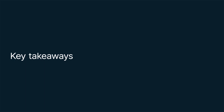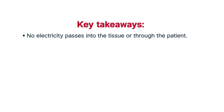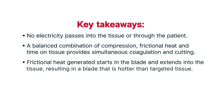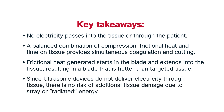Key takeaways. No electricity passes into the tissue or through the patient. A balanced combination of compression, frictional heat, and time on tissue provides simultaneous coagulation and cutting. The frictional heat generated starts in the blade and extends into the tissue, resulting in a blade that is hotter than the targeted tissue. Since ultrasonic devices do not deliver electricity through tissue, there is no risk of additional tissue damage due to stray or radiated energy.